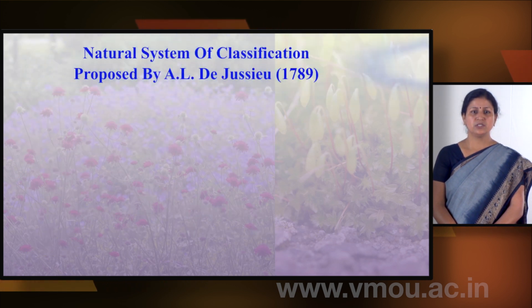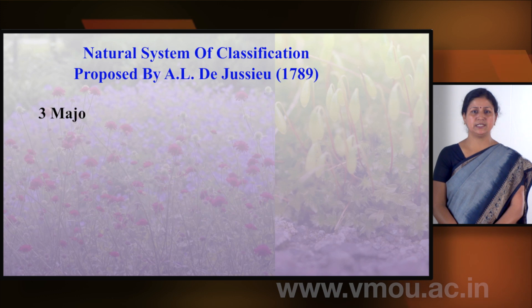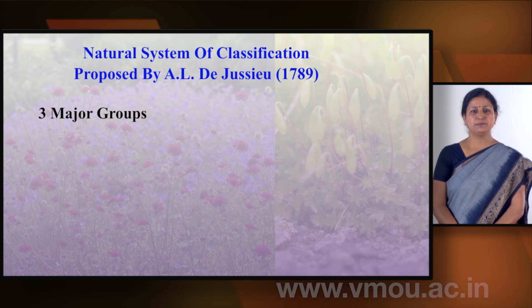The second system of classification is called the natural system, given by Adanson, de Jussieu, and de Candolle. They created three major groups under this system.